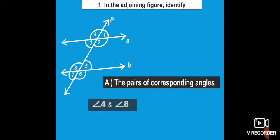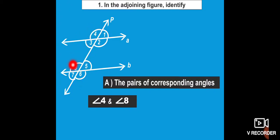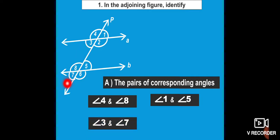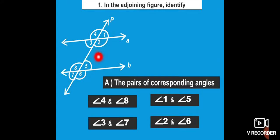So we start from angle 4 and angle 8 — these are corresponding, at the same position on line A and line B, both on the left side. Another pair: angle 1 and angle 5, same position. Next: angle 3 and angle 7. Next: angle 2 and angle 6. These are the pairs of corresponding angles.